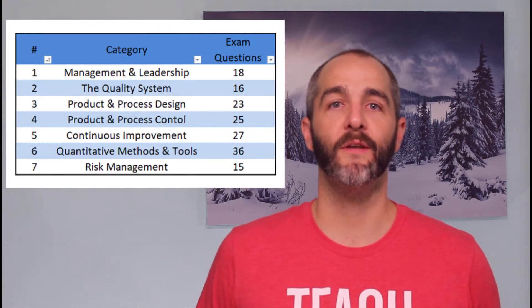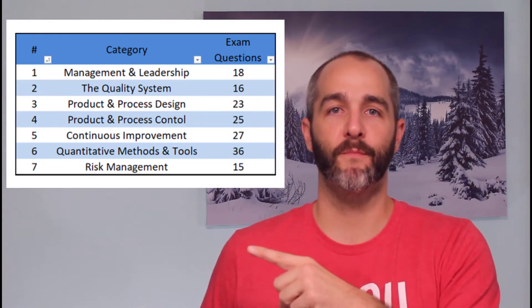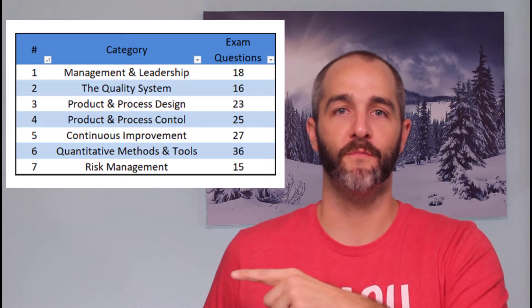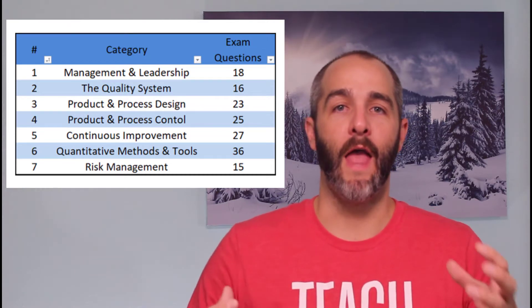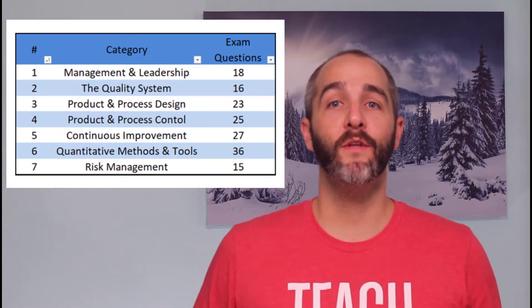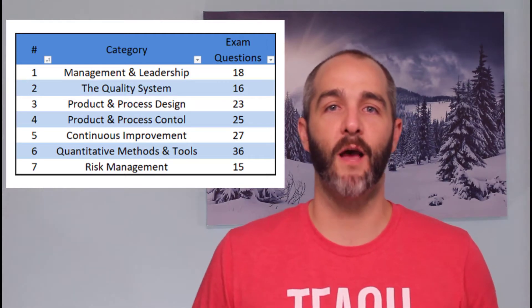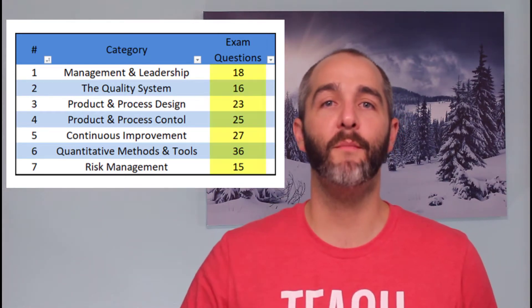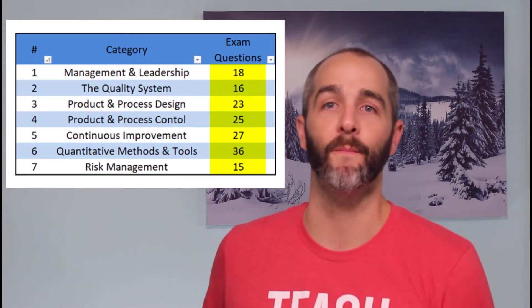There are seven major categories of topics: management, leadership, quality system, product and process design, product and process control, continuous improvement, statistics, and risk management. Not only does the body of knowledge tell you about all of these topics and their subtopics, it tells you how many questions on the exam are going to come from each category.